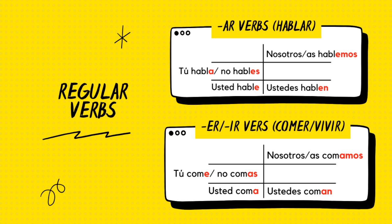Look at the highlighted endings for the AR regular verbs. Now let's look at the ER and IR verbs, such as comer and vivir: tú come, no comas, usted coma, nosotros or nosotras comamos, ustedes coman. Please take note of the highlighted endings for the ER and IR regular verbs.